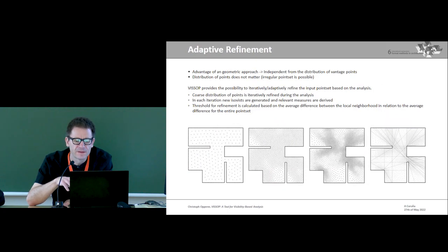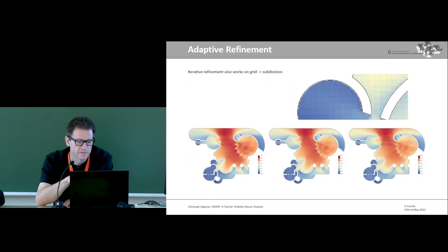Because the clustering coefficient is typically calculated on the visibility graph, but it could also be computed geometrically by using sub-ISOVIST. One of the practical advantages, beside all the theoretical background, is that a geometric approach is independent from the distribution of vantage points. In other words, it works perfectly fine with an irregular distribution, which VisApp also uses since it provides the possibility to locally refine the input point set based on various measures and thresholds. This also works when you have to fine-tune or to find a very fine granularity on shapes like this.